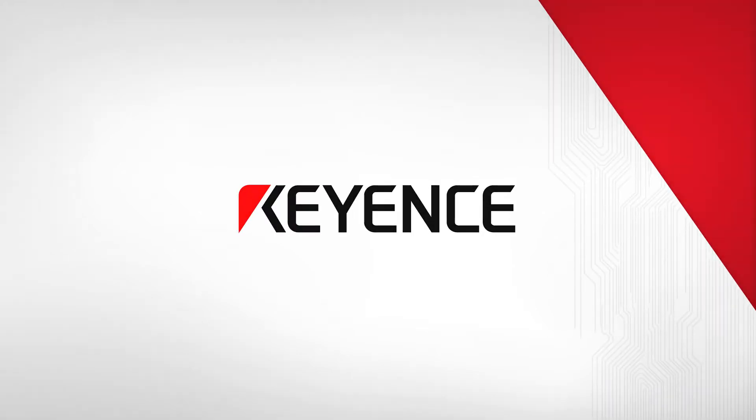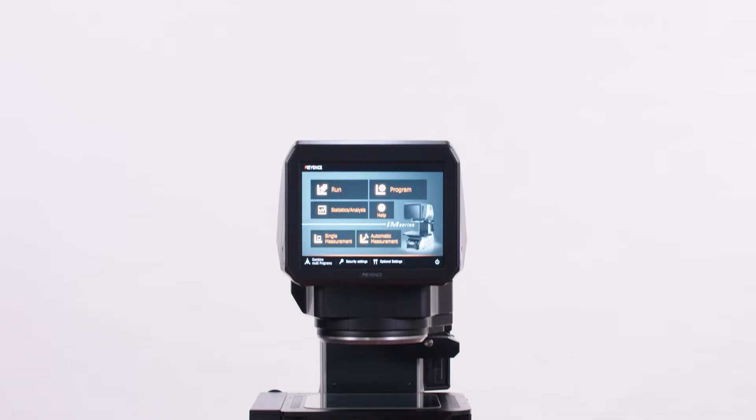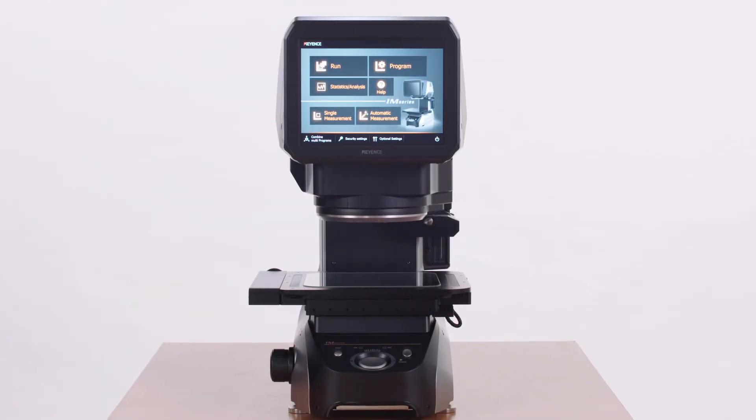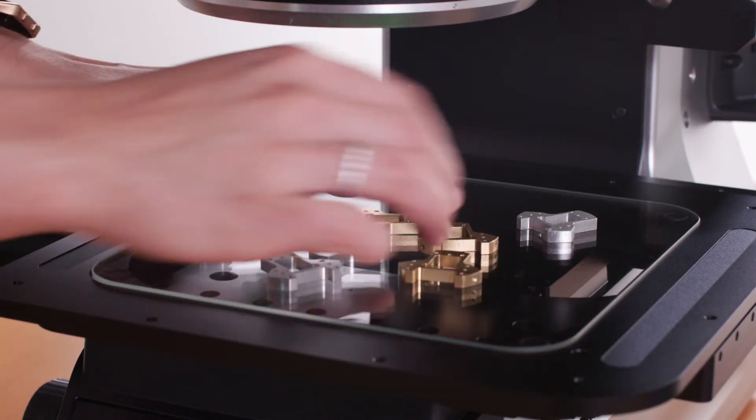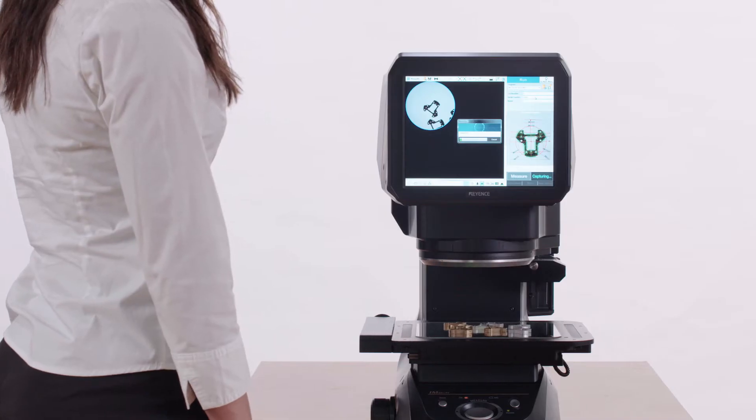Keyence has raised the expectations of metrology equipment with the IM-Series Instant Measurement System. The Instant Measurement System is the next generation automated optical comparator, giving you the capability of measuring all your parts features in as much time as it takes to push a button, making it the most productive few seconds of your day.